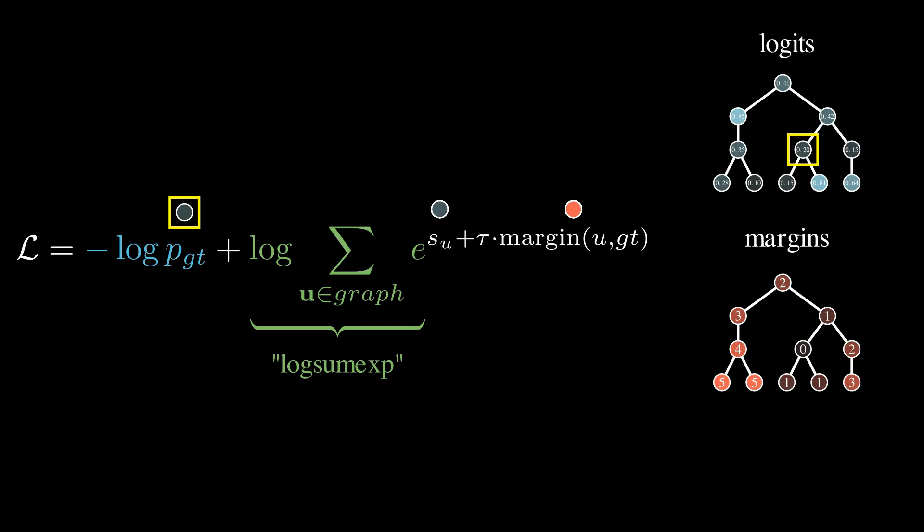However, here we use it as a smoother approximation of a maximum. By minimizing this term, we in principle push down all the likelihoods, but those with a larger margin will be penalized harder and thus go down faster.